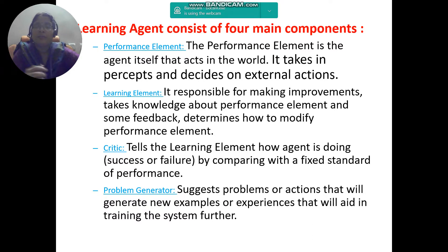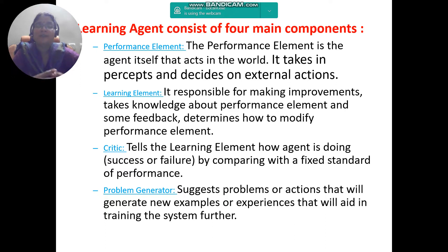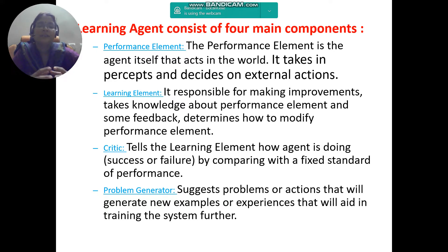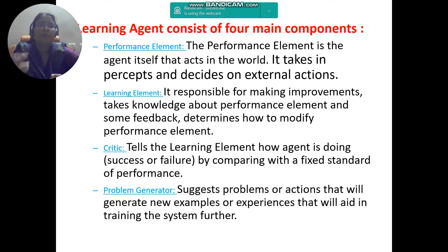The critic always criticizes the activities of the agent to improve its performance. The problem generator suggests new problems or actions that will generate new examples or experiences to aid in further training the system — suggesting new kinds of actions to be generated and new kinds of problems to be handled for more performance.